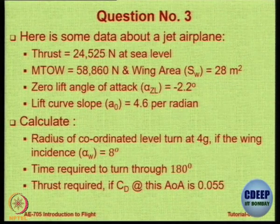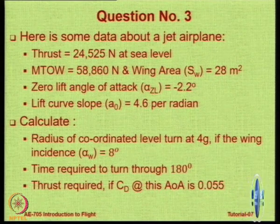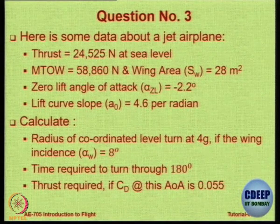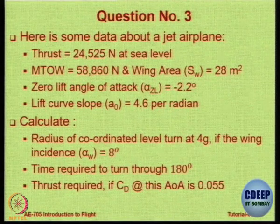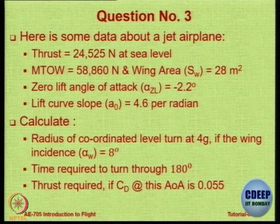This is a slightly involved question and will take time. First, figure out the approach before solving. Draw the horizontal circle in top view and write down the equations needed for radius of turn. The equation is: R = V² / (√(N² − 1) · g). N is available; the denominator is known. Now you need V.